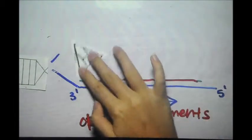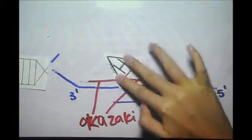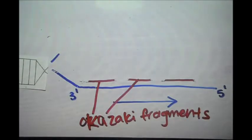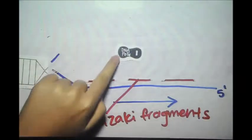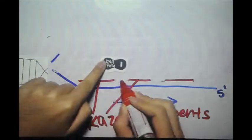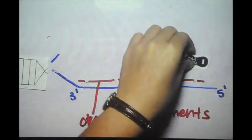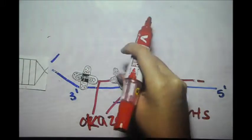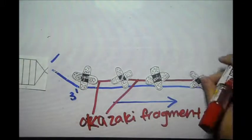RNase H removes the primers of the fragments and DNA polymerase 1 comes in to remove the terminal RNA nucleotides. Polymerase 1 also replaces the removed primers with DNA nucleotides. DNA ligase then helps to seal up the fragments into a complete strand.